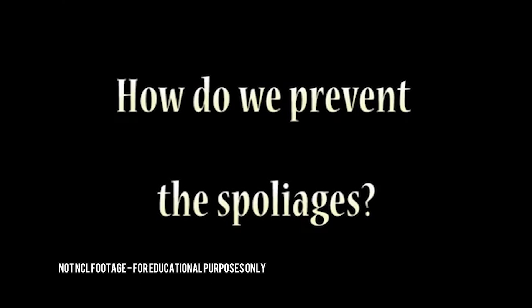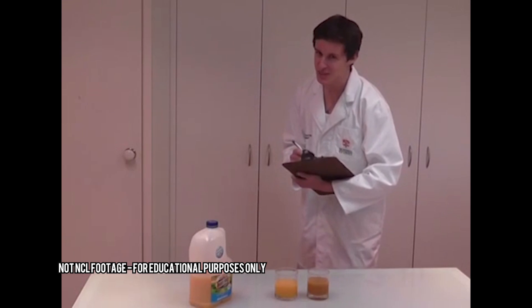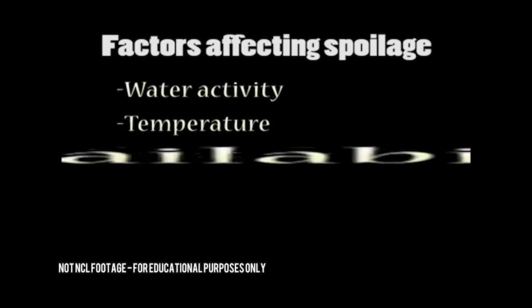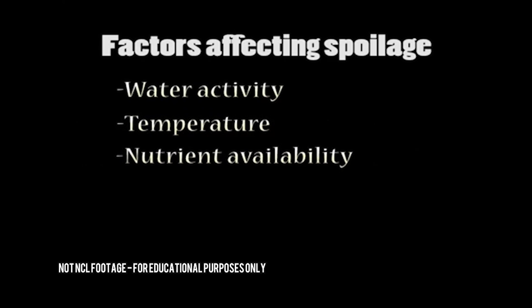There are many factors that influence the rate of spoilage, such as water activity, temperature, nutrient availability, pH and oxygen. By controlling these factors, physical, chemical and microbial spoilage of food can be slowed and controlled to a greater extent.